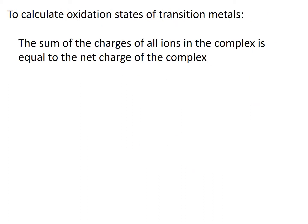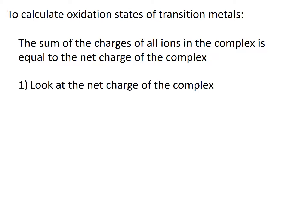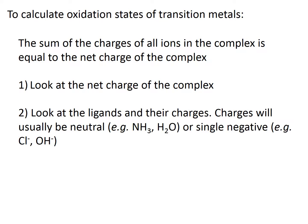When working out the oxidation state of a metal from its formula, the most important principle to remember is that the sum of the charges of all of the ions in the complex must equal the overall net charge of the complex. It might be helpful to follow these steps. Firstly, look at the net charge of the complex. Secondly, look at the ligands and their charges. This will require remembering the charges on common ligands like amine and water, which are neutral, and chloride and hydroxido, which are minus one.